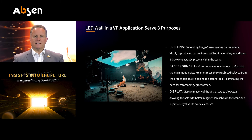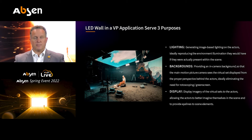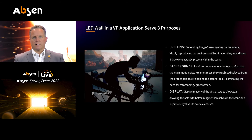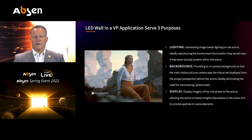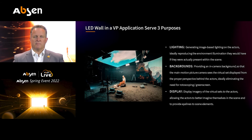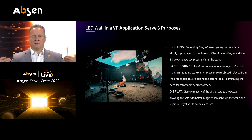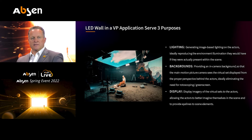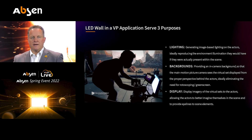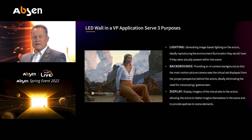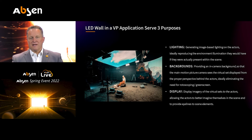What are the three main purposes for virtual production or the LED volume? One point is lighting — if you consider an LED ceiling, you can use it for lighting up the whole scene as well as for reflections. The most important part is the background, which has the content the actor or moderator needs to interact with. Then there is the interaction itself, where the LED display is used as a display and as direct, immediate feedback for the moderator and actor.